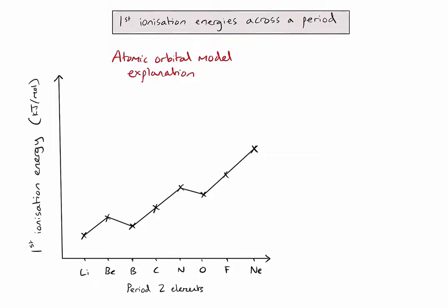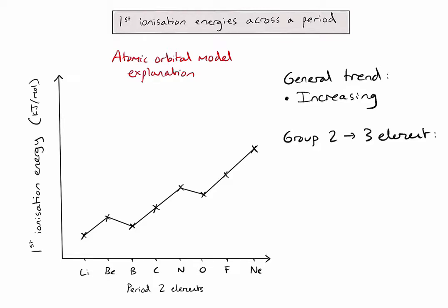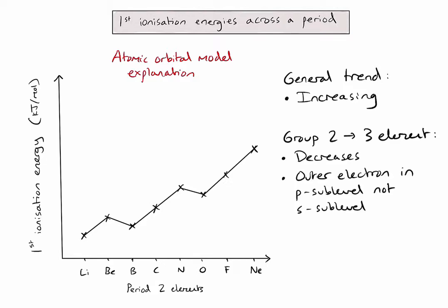As a brief summary: the general trend in first ionization energy across a period is increasing. There are two exceptions to explain. The first exception is between the group 2 and group 3 elements — beryllium and boron in this case. We see a dip in ionization energy because the outer electron is now in a P sub-level instead of the S sub-level, which is further from the nucleus and higher in energy, so it feels less electrostatic attraction.